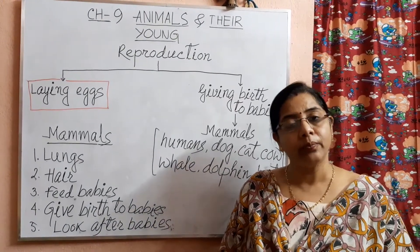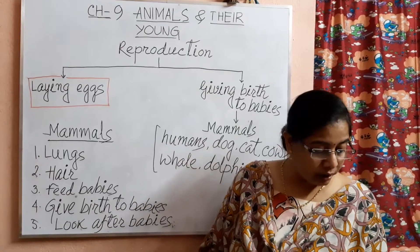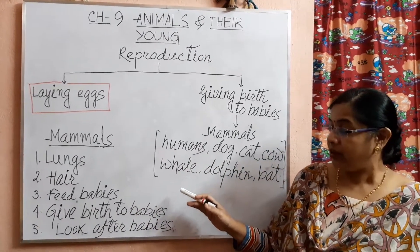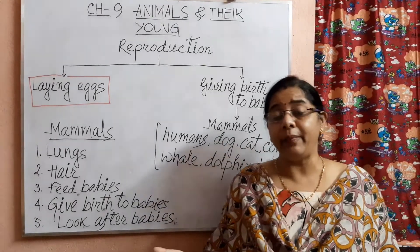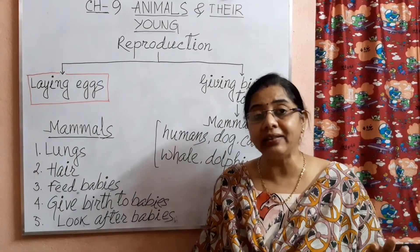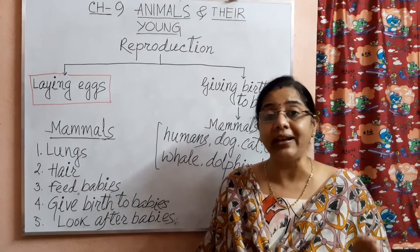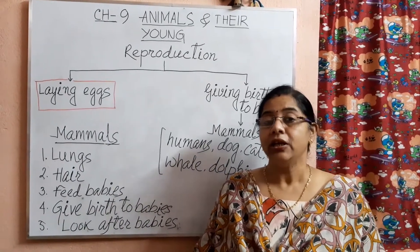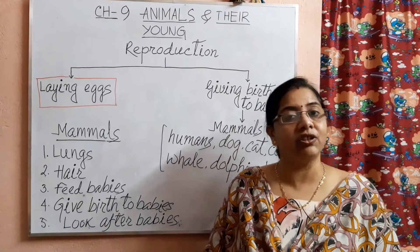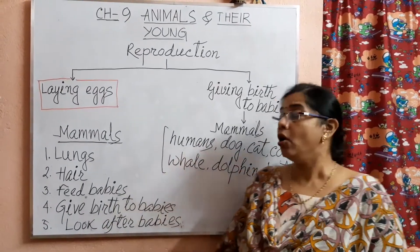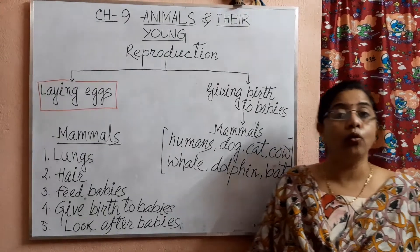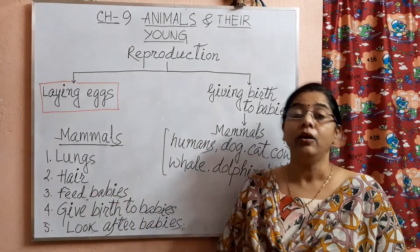Today we have completed this chapter. The mammals look after their babies, collect food for them, feed them, and protect them from their enemies, as human beings do for their children. All of you learn this part of your book, chapter 9, properly.